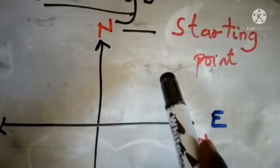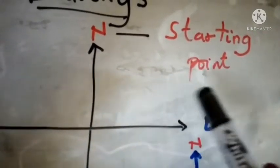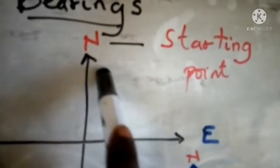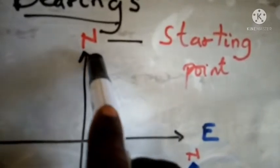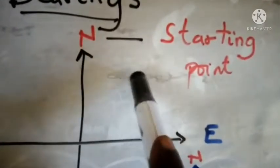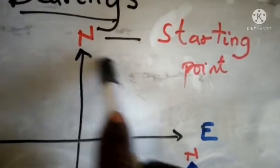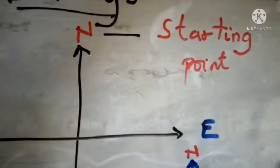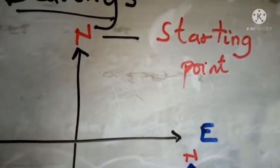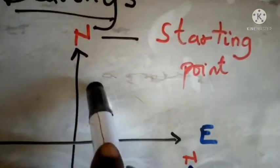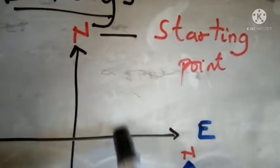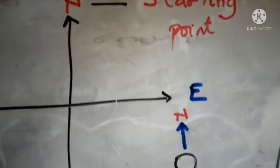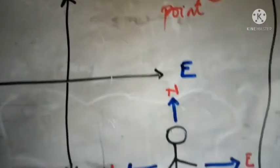If you want to give a direction to someone, you must be facing the person. That is the assumption behind bearings — most of the time we start from the north. What I mean is that you must be facing the person before giving them a direction. That is why we take the measurement from the north direction.